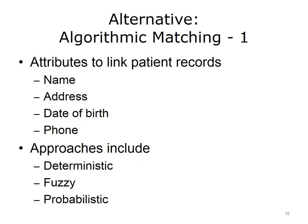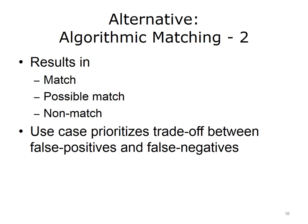The alternative to a national identifier is the use of algorithmic matching — matching algorithms that link patient records based on various attributes such as name, address, date of birth, phone number, gender, etc. There are three major algorithmic matching approaches: deterministic, fuzzy, and probabilistic. Note that these are not necessarily mutually exclusive. The matching process results in a match, a possible match where human intervention may be needed, or a non-match.